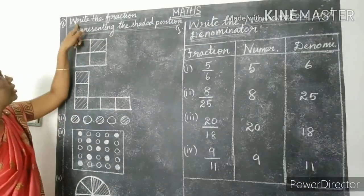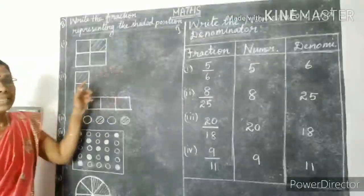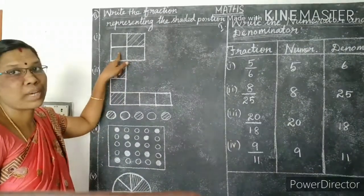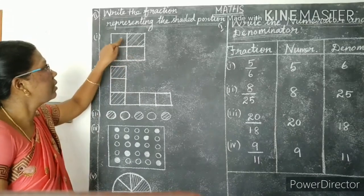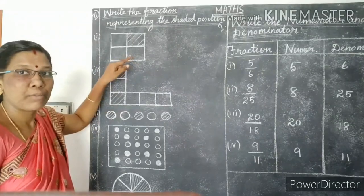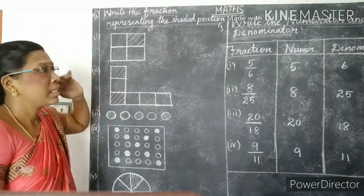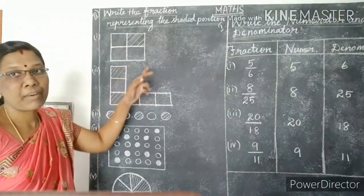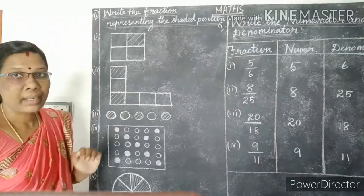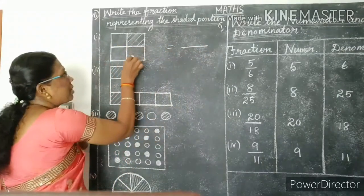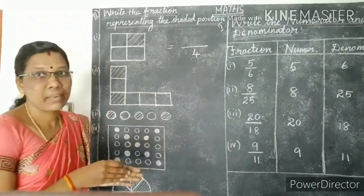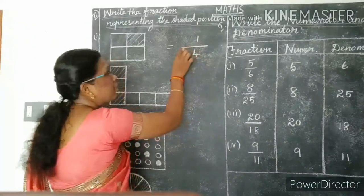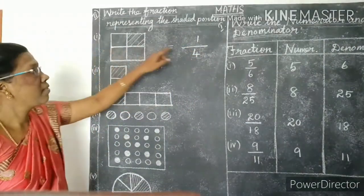See the next topic: write the fraction representing the shaded portion. The first shape is a square. How many parts are there totally? One, two, three, four — total four parts. Shaded portion is one. We write denominator as total number of parts, so denominator is four. The numerator is the shaded portion — one. So the fraction of the given shaded portion is one by four.